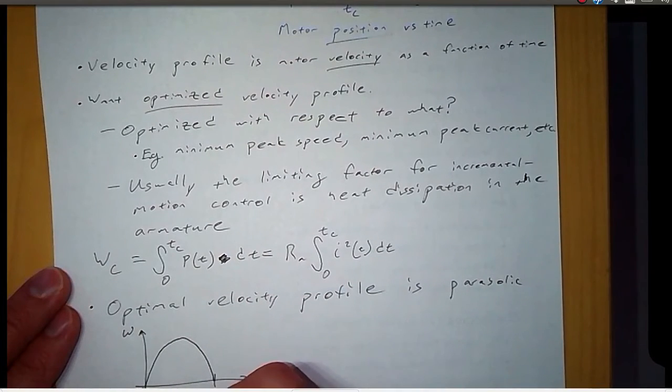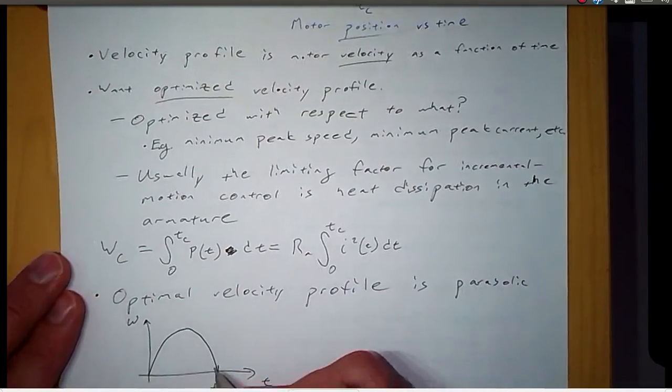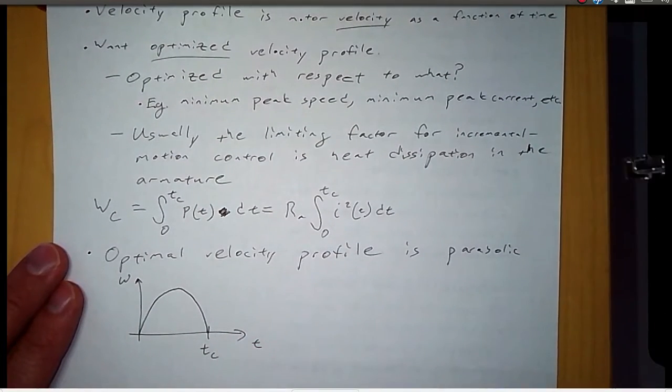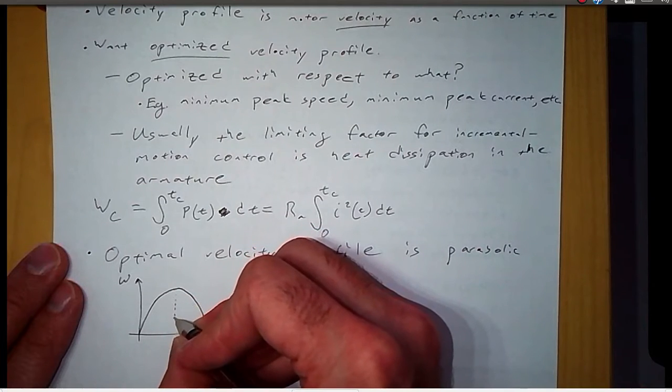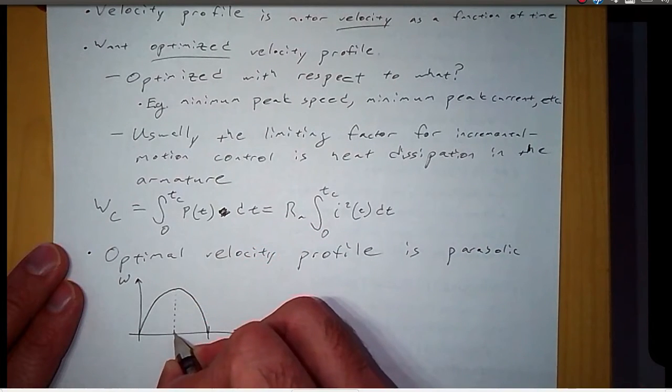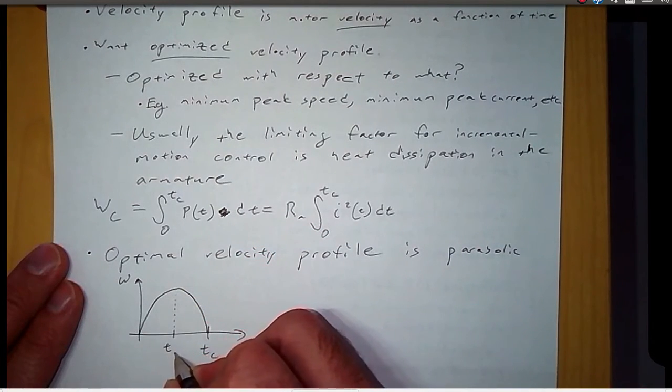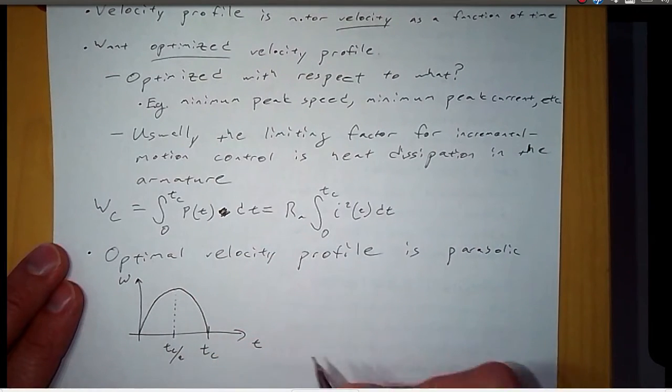So at time zero, the velocity is zero. And at time tc, we've reached our destination, and the velocity is zero again. And the peak velocity is at the halfway point in time.